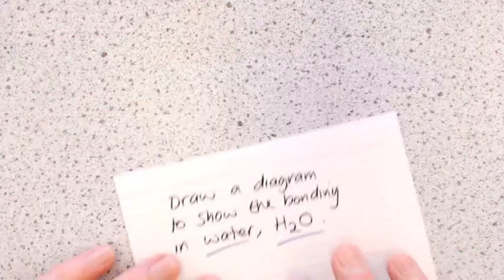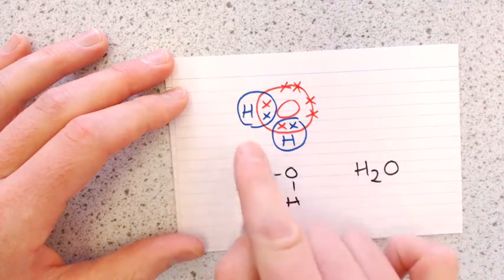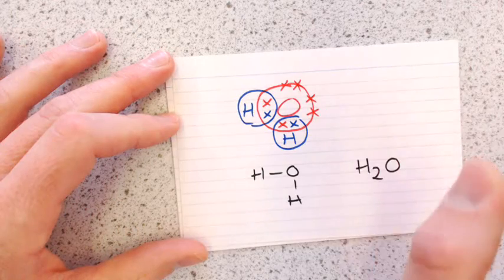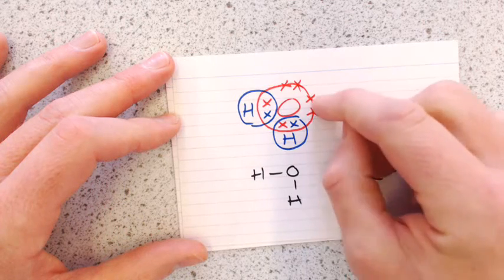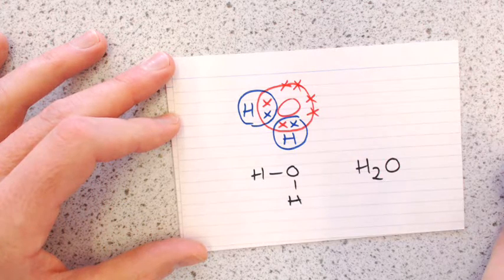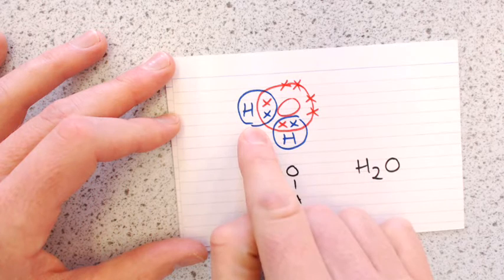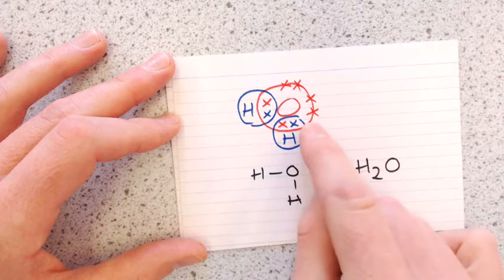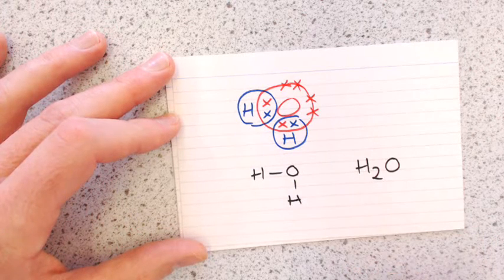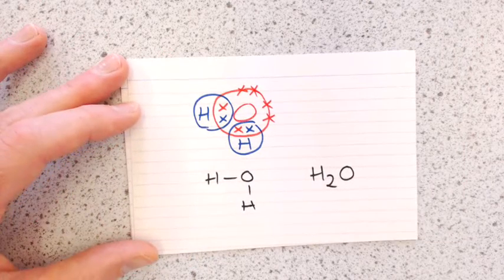Water: oxygen is in group six so it has six electrons in its outer shell and wants to get to eight. It shares one pair with one hydrogen and another pair with a second hydrogen. The oxygen now has eight electrons and both hydrogens have two. You draw that as H–O–H with two single bonds, or more commonly as H₂O.